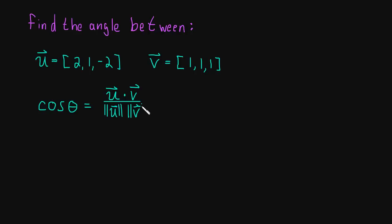If we want to find the angle between two vectors, we have to do just a few computations. We have to find the dot product and then we have to find the length of each vector. So let's go through that.